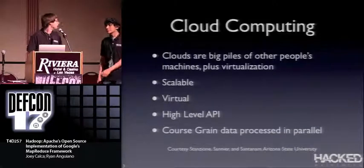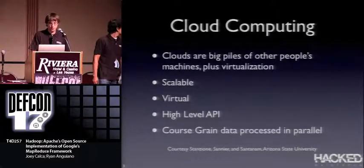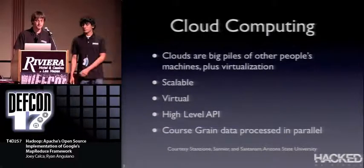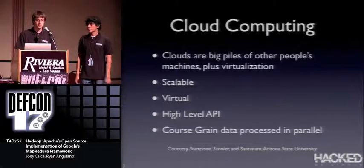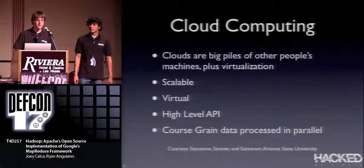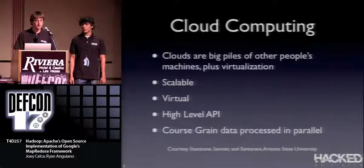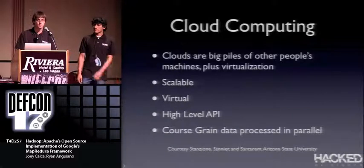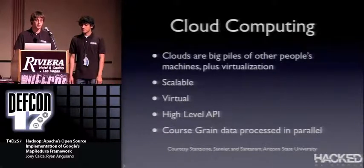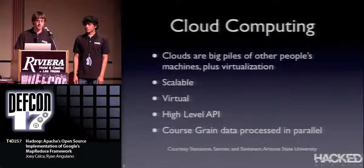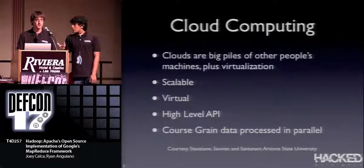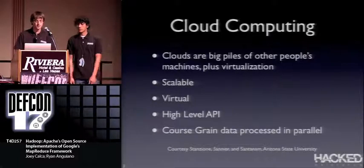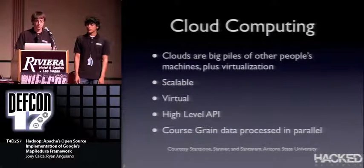A few things most people should already know about clouds: they're big piles of other people's hardware, with some element of virtualization built in. They're scalable — you can drop nodes in and out without affecting how the cloud runs. With Hadoop, you have a high-level API so you don't have to deal with moving data around or networking. You just write a mapper and reducer and the framework takes care of the rest. Hadoop really utilizes core streaming data processed in parallel.